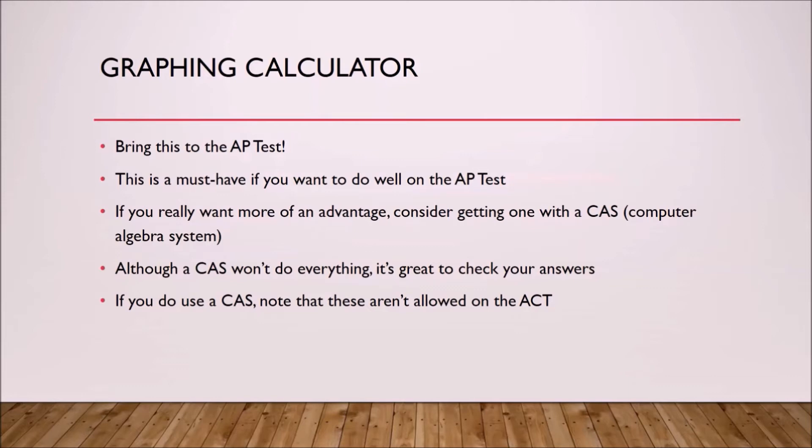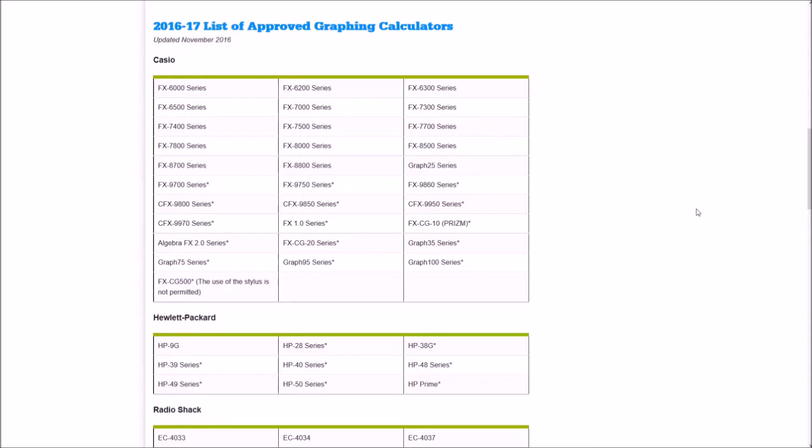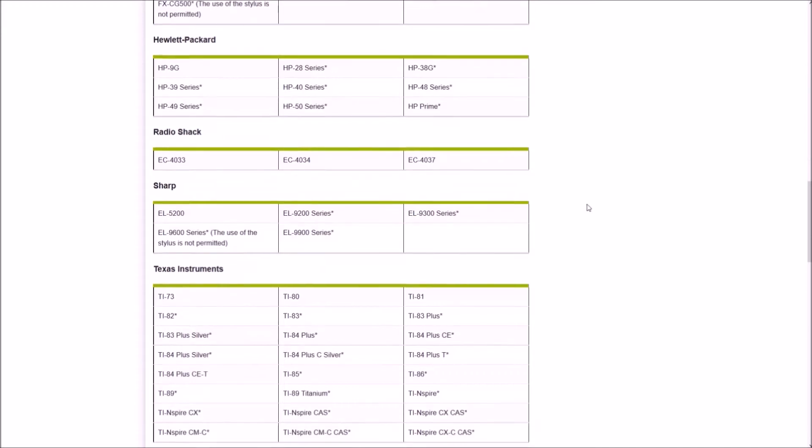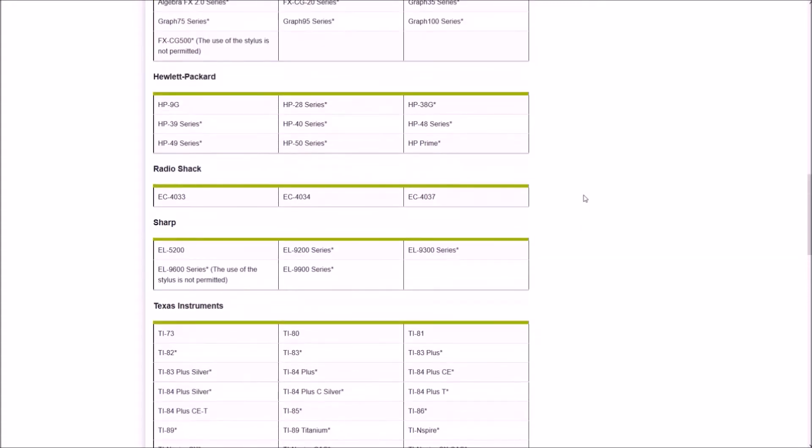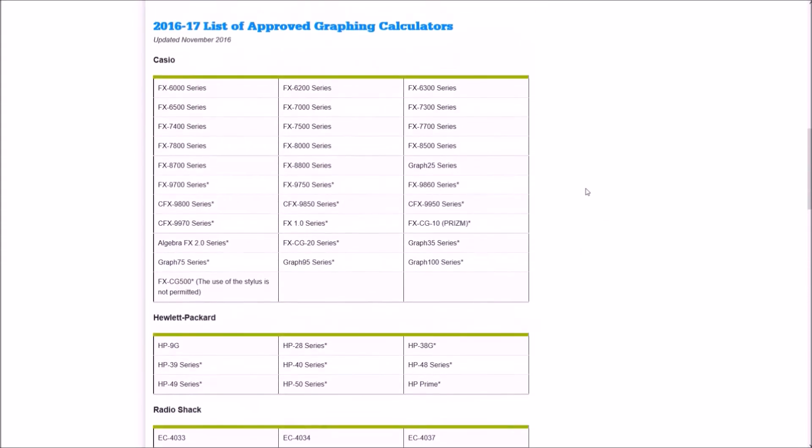All right, so on the screen now is a list of approved graphing calculators for the AP test. If you're wondering whether your current calculator is allowed, simply check this list. You can click the annotation or look at the link in the description. Now this seems like a lot, and it is, so you're probably wondering which of these should I get for the AP test.